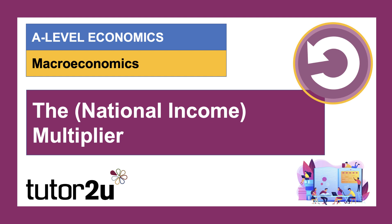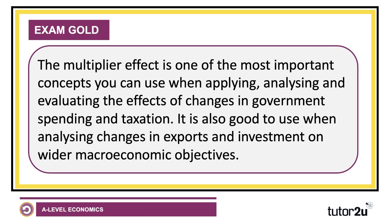Welcome to a macro video where we're going to be looking at the multiplier. This is a series of short videos looking at the concept — we'll do the numerical calculations in our second video. An initial change in aggregate demand can have a much greater final impact on the level of equilibrium national income. This is known as the multiplier effect, sometimes called the national income multiplier or the fiscal multiplier, and it's one of the most important concepts in economics.